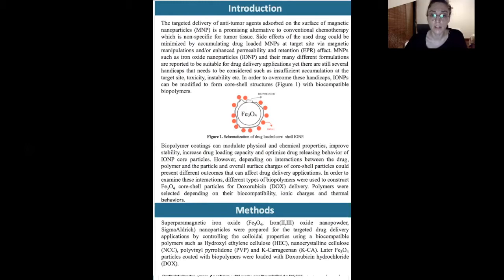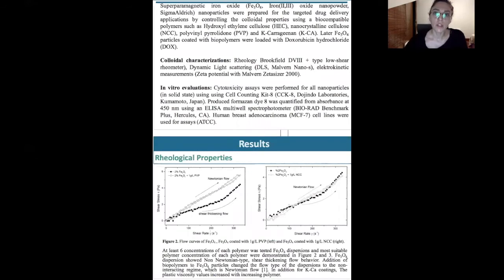Let me go on to the methods. In here we used iron oxide particles and we coated them with hydroxyethyl cellulose, nanocrystalline cellulose, polyvinyl pyrrolidone, and kappa-carrageenan. These polymers have different kinds of properties and we wanted to see their influence on the final product itself.